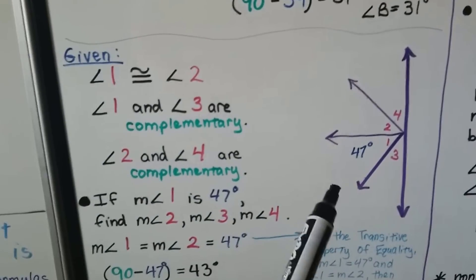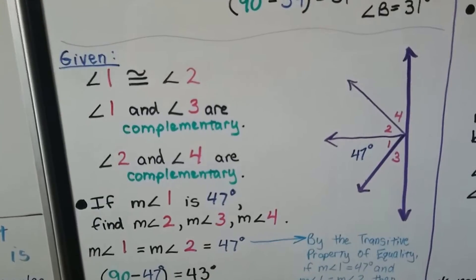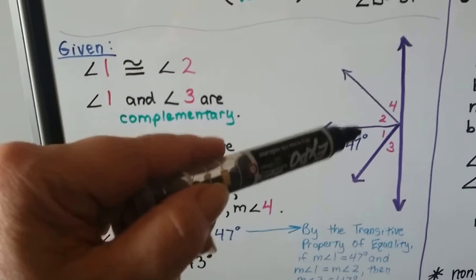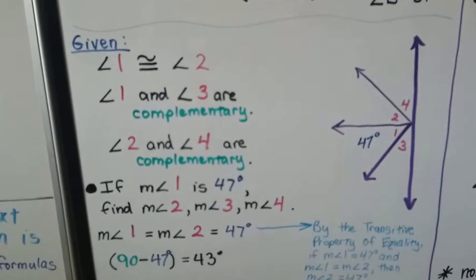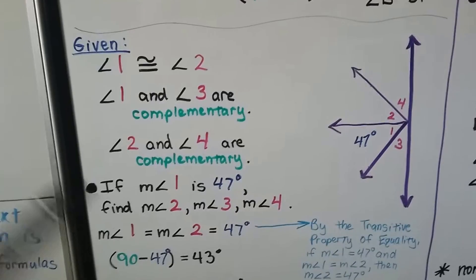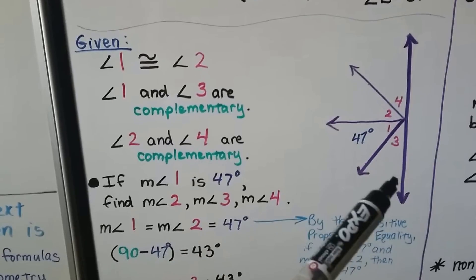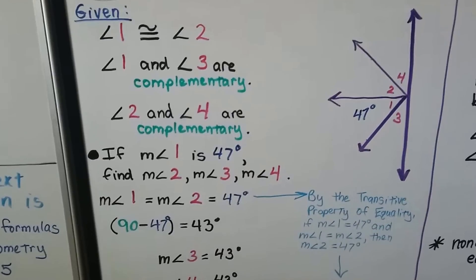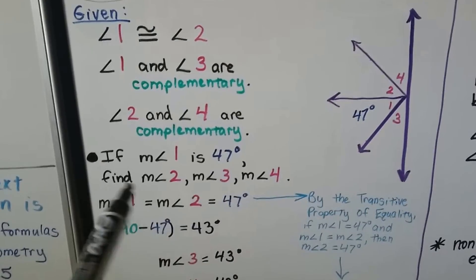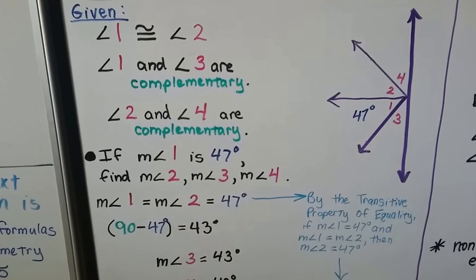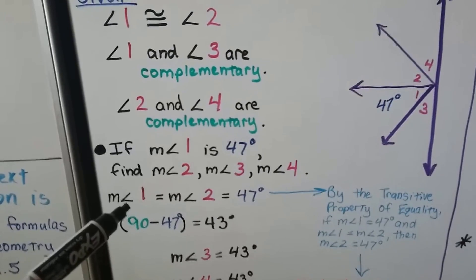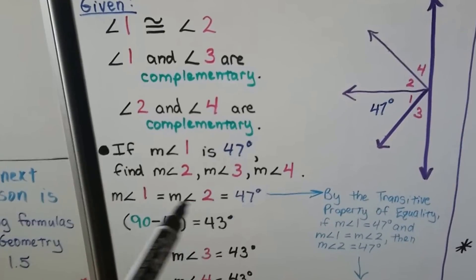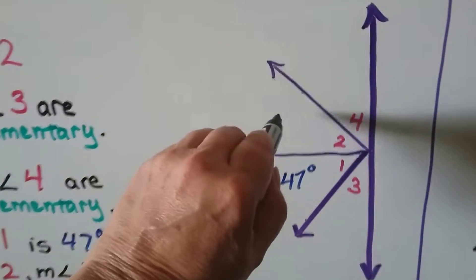Given a diagram with angles 1, 2, 3, and 4: angle 1 is congruent to angle 2, angle 1 and angle 3 are complementary, and angle 2 and angle 4 are complementary. If the measure of angle 1 is 47 degrees, find the measures of angles 2, 3, and 4. Since angle 1 is congruent to angle 2, by the transitive property of equality, angle 2 is also 47 degrees.